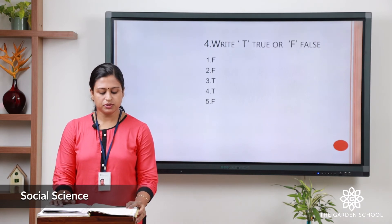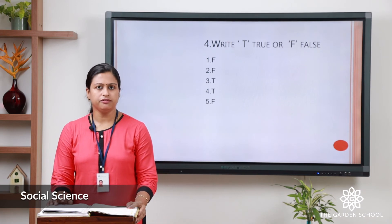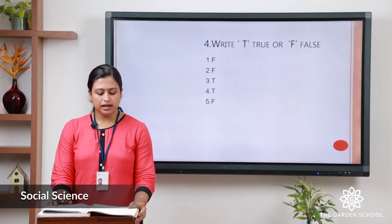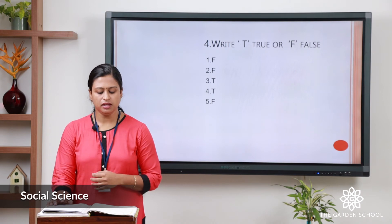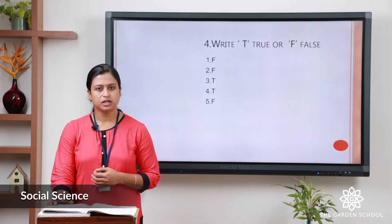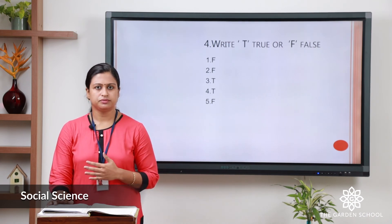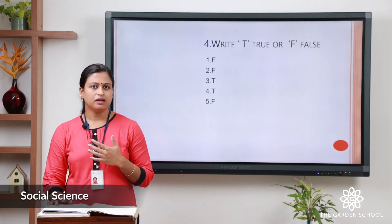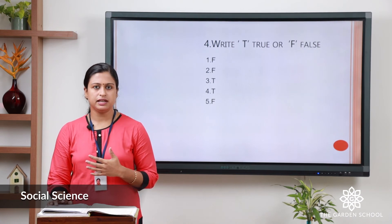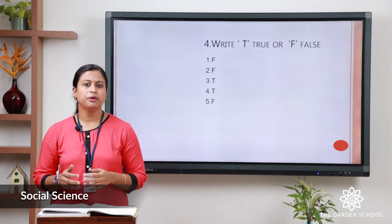I hope you marked your answers. Now let us check the answers. First: the map that shows physical features is called a thematic map — it is false. Physical map shows the physical features of the world. Second: the legend of a map states what the map shows — it is false; the heading of a map shows what the map is going to tell us. Third: a map can give detailed information about the smallest area on earth — it is true. Fourth: the colour brown is used to show mountains on a map — it is true. Fifth: large scale map shows a lot of detail about a large area — the answer is false; large scale maps usually show a lot of information about a small area. I hope you checked your answers.